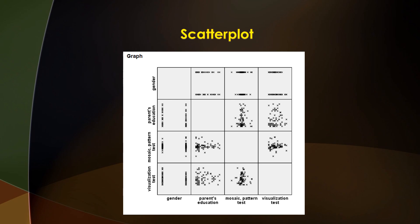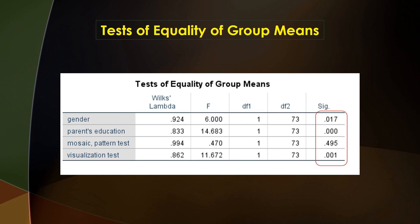Moving on to the next graph, box plots are used to examine outliers. This scatter plot is the result of checking the assumption of homogeneity of variance-covariance matrices, and that assumption is met in this case. Moving on to the next chart, this table is used to show which independent variables — gender, parents' education, mosaic pattern tests, and visualization tests — are significant predictors by themselves. Looking at the results, gender, parents' education, and visualization are all significant predictors by themselves, while mosaic based on its value is not.